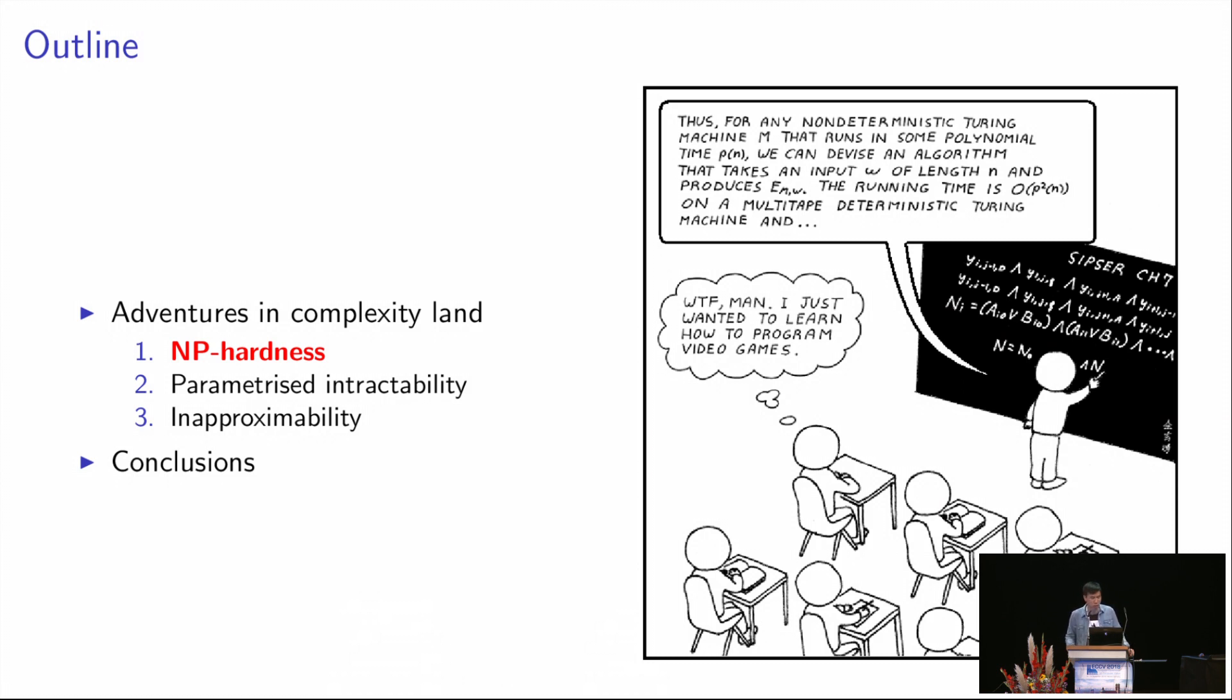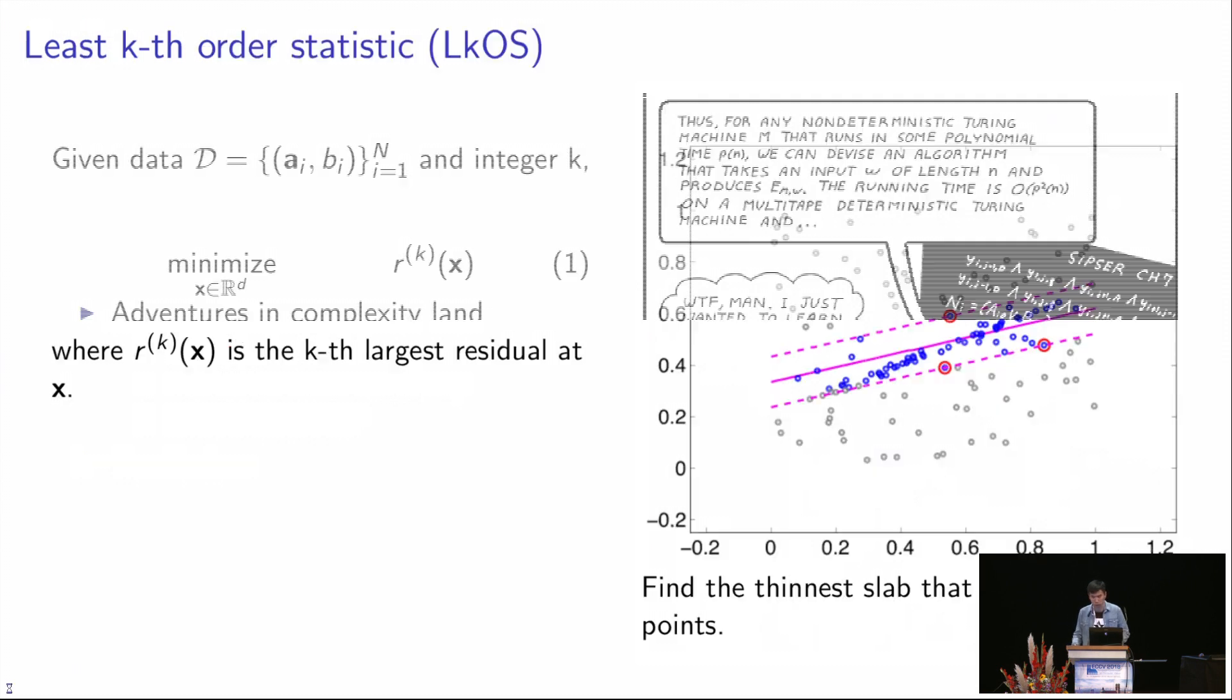The NP hardness, the parameterized intractability, and the inapproximability. Each part of them shows one hardness result for the consensus maximization problem. So let's start one by one.